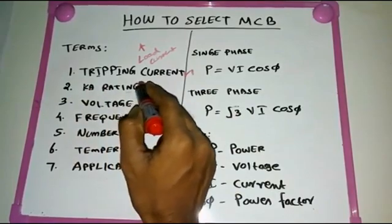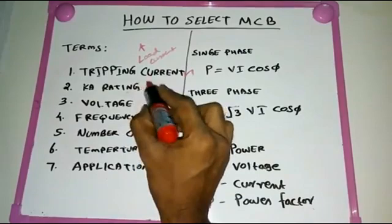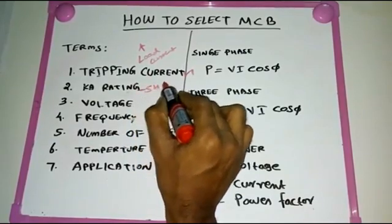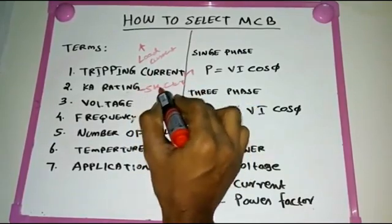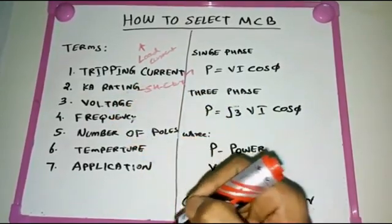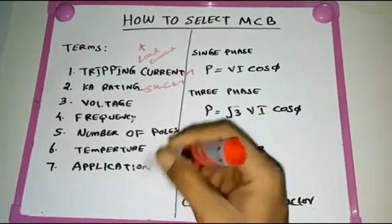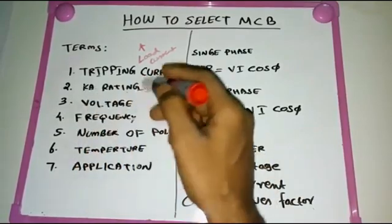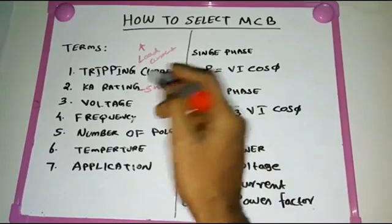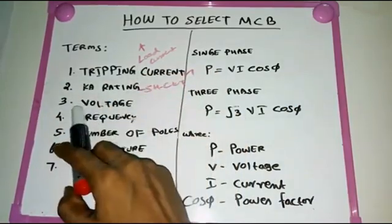The next term is K rating, also called KA rating, which means short circuit breaking capacity. This means that for less than one second, when a surge current occurs, the MCB will not trip — it is designed to withstand that current briefly without tripping.